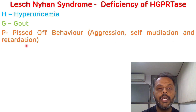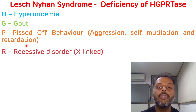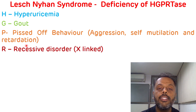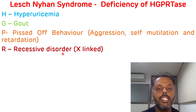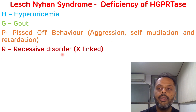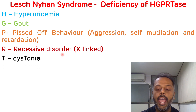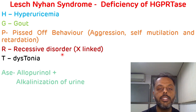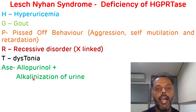Then R stands for recessive disorder. Lesch-Nyhan Syndrome is inherited as an X-linked recessive disorder. E stands for dystonia, and ACE stands for allopurinol and alkalinization of urine.